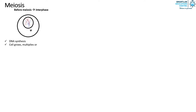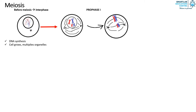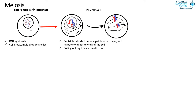Before meiosis, cells are at the interphase stage, whereby DNA synthesis occurs and the cell grows and multiplies its organelles. The first stage of meiosis is prophase 1. The centrioles divide from one pair into two pairs and migrate to opposite ends of the cell. The long thin chromatin threads coil into thick condensed chromosomes, the nuclear membrane breaks down, and spindle fibers connect to centromeres.